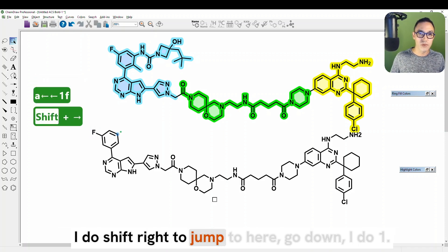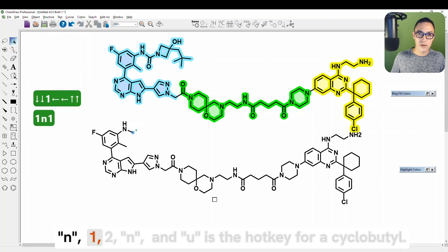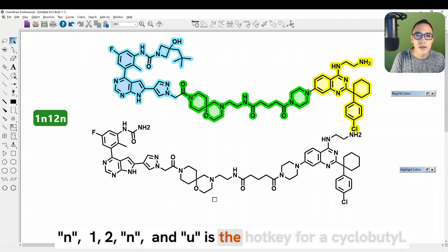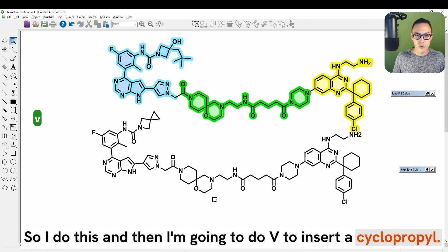I move, I press one, I press F to insert a fluorine. I do shift right to jump here, go down. I do one, N, one, two, N, one, and U is the hotkey for a cyclobutyl. So I do this, and then I'm going to do V to insert a cyclopropyl.